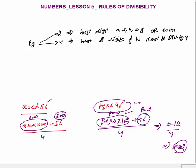The same is true for divisibility by 8. For 8, we check the last three digits of the number — they should be divisible by 8. If the last three digits of any number are divisible by 8, the number is completely divisible by 8.